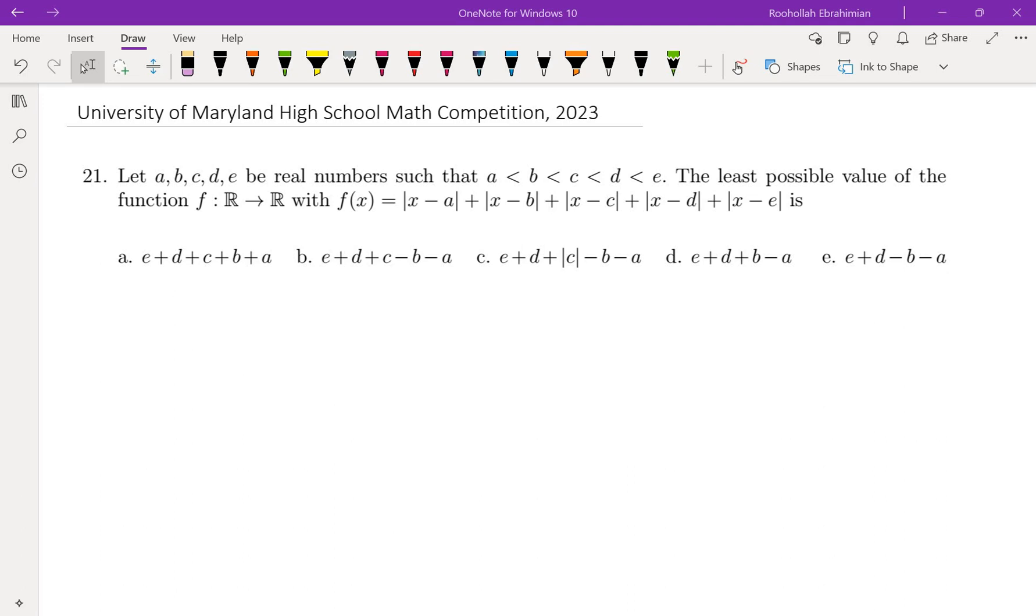absolute value of x minus D, and absolute value of x minus E, all of these added, is—and they gave us five answer choices.